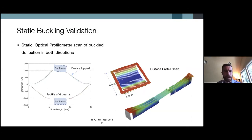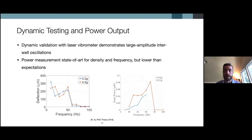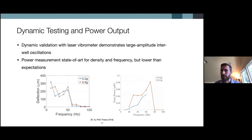Dynamically, we tested the device by mounting it to an electromagnetic shaker and using a laser vibrometer to measure deflections of the central proof mass at different frequencies. This dynamic evaluation showed that the proof mass was deflecting significantly, suggesting those large inter-well oscillations we described, where the PZT elements are being strained to generate the appropriate electric response. However, our power measurements, while state-of-the-art for this power density and large bandwidth, were lower than expectations and not quite what we targeted to power commercially available low-powered sensors.